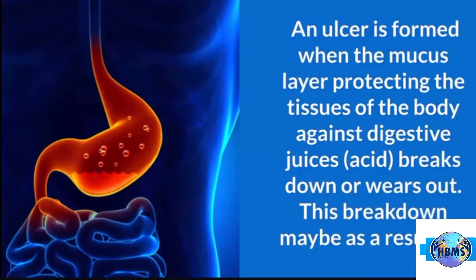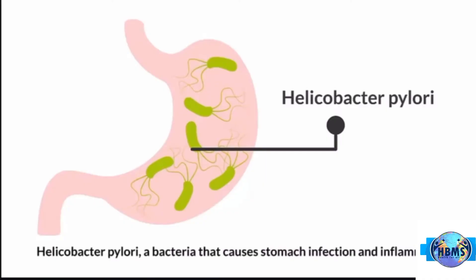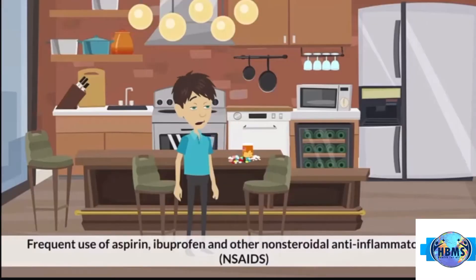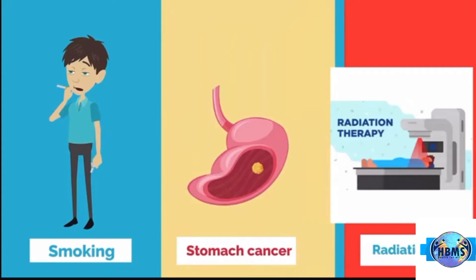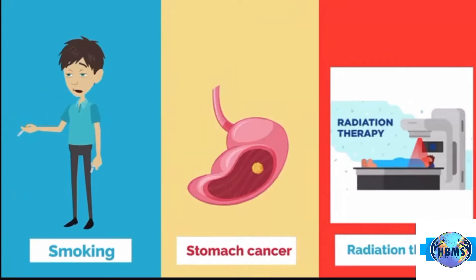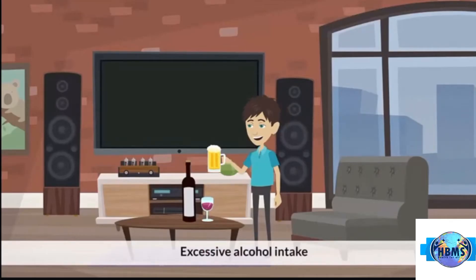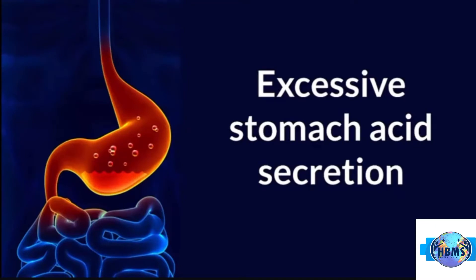An ulcer is formed when the mucus layer protecting the tissues of the body against digestive juices or acid breaks down or wears out. This breakdown may be a result of Helicobacter pylori, a bacteria that causes stomach infection and inflammation; frequent use of aspirin, ibuprofen, and other non-steroidal anti-inflammatory drugs or NSAIDs; smoking; stomach cancer; radiation therapy; excessive alcohol intake; or excessive stomach acid secretion.